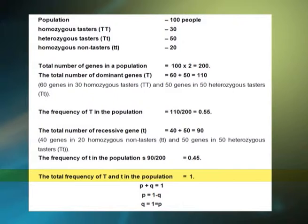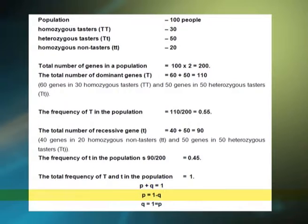The total frequency of capital T and small t in the population is 1. If capital T is represented by p and small t is represented by q, then p + q = 1, p = 1 − q, and q = 1 − p.